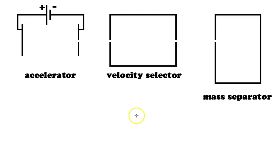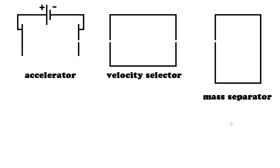Today we're going to take a look at and examine what is known as a mass spectrometer. The idea is simply to figure out what exactly is the mass of a particle. The process of doing that is actually in three steps: a particle is going to go through what's known as an accelerator, then through something known as a velocity selector, and lastly through another space we call the mass separator. Each one requires a little bit of math and understanding of how magnetic fields and electric fields interact with a particle.